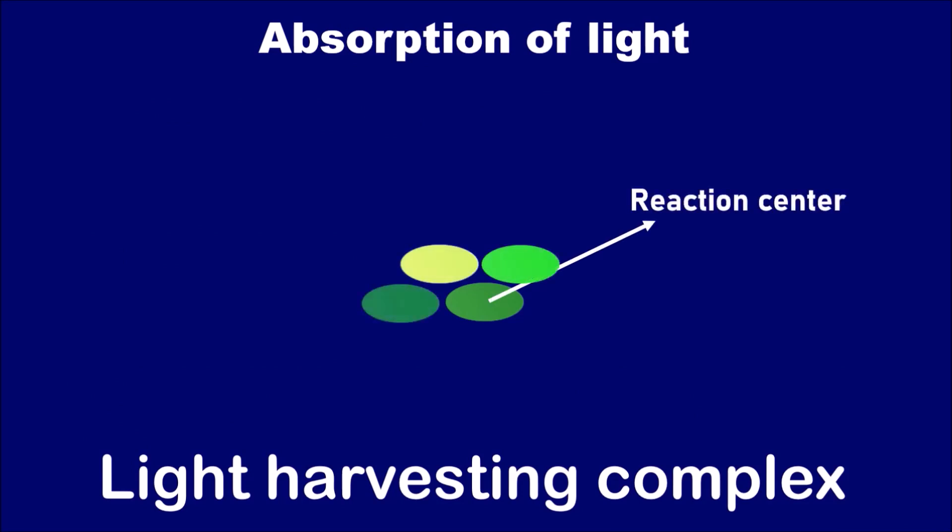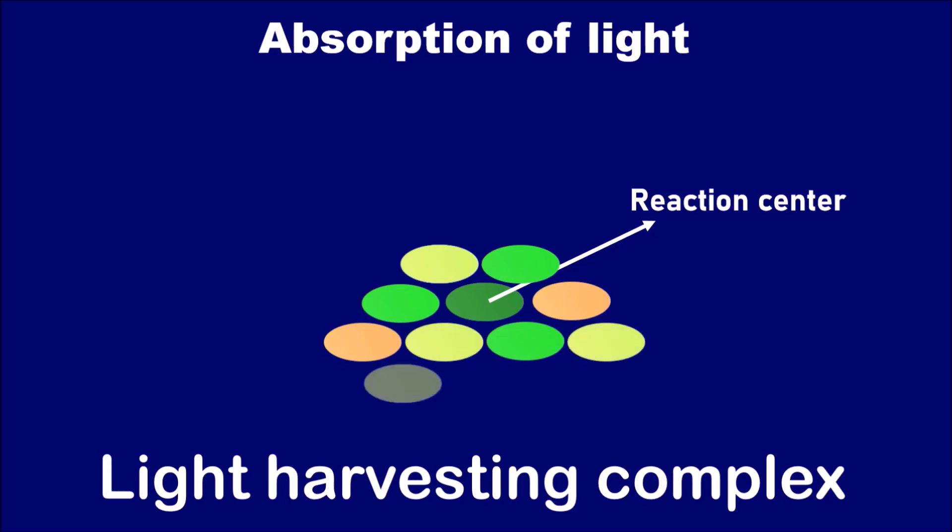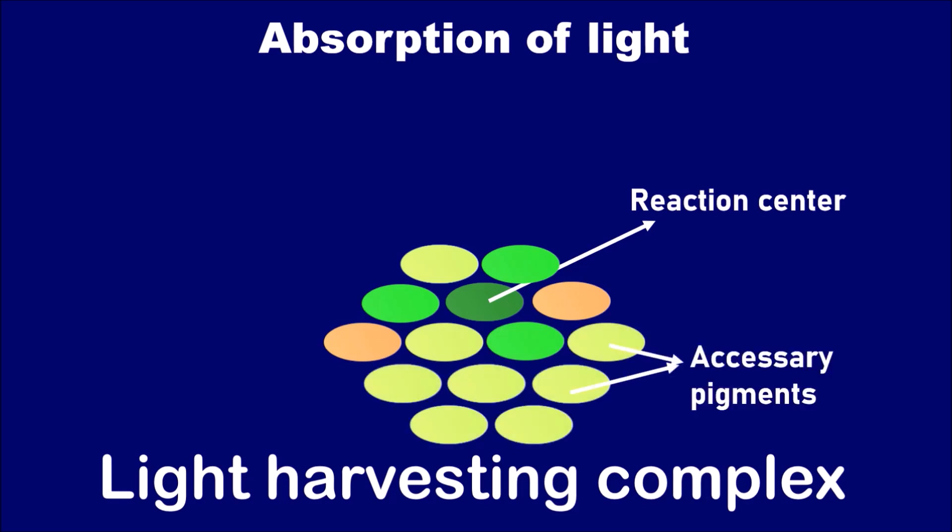Whereas, other pigments such as chlorophyll B, carotenoids and xanthophylls remain as accessory pigments. All these accessory pigments act as antenna because when the light falls on the complex in the form of photons,